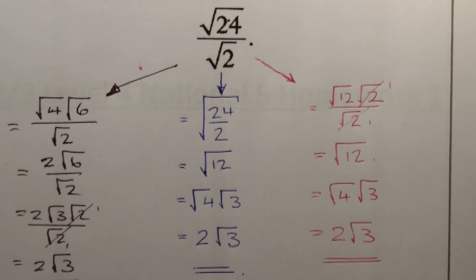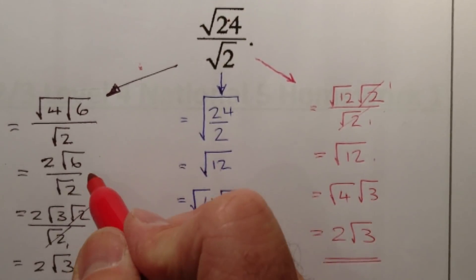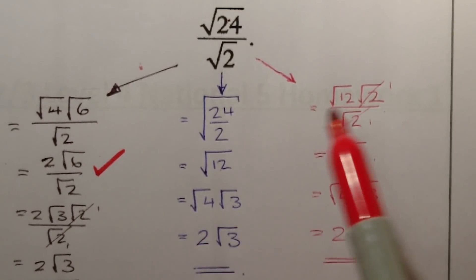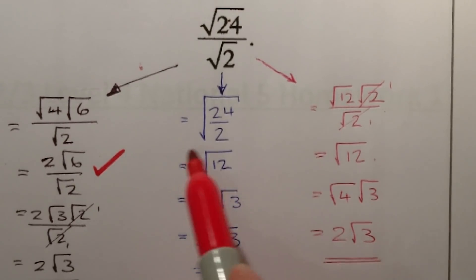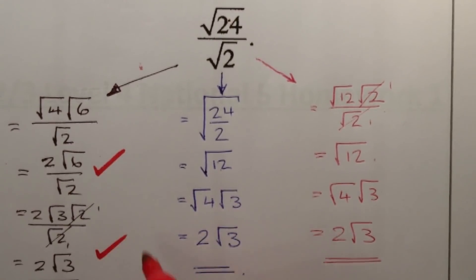Marking for question 4: 1 mark for getting to 2 root 6 over root 2, or equivalently root 12 at an intermediate step; and 1 final mark for the answer 2 root 3. That's 2 marks for this question.